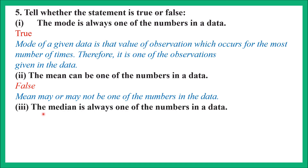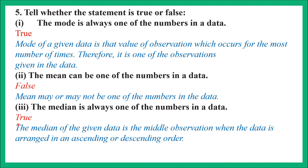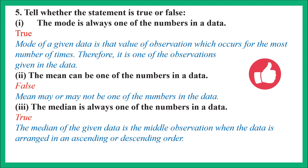Part 3: 'The median is always one of the numbers in the data.' Yes, this statement is true. Median is the middle-most value of the data, so it is one of the numbers in the data. The median of given data is the middle observation when the data is arranged in ascending or descending order, so median is always one of the numbers in the data.